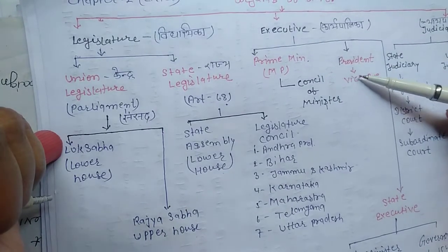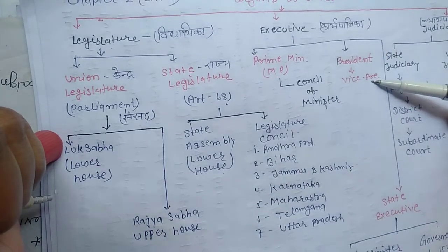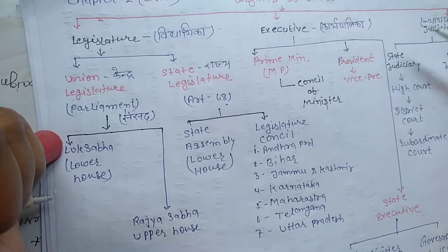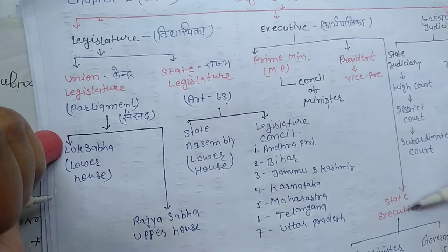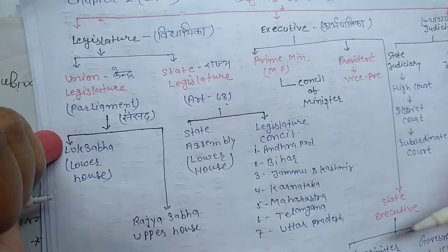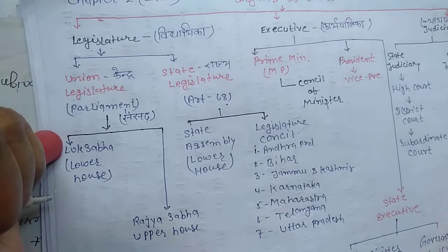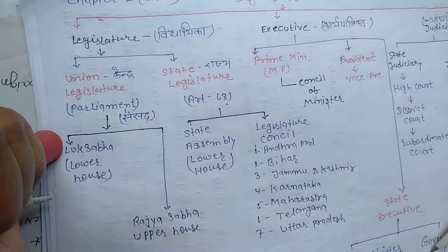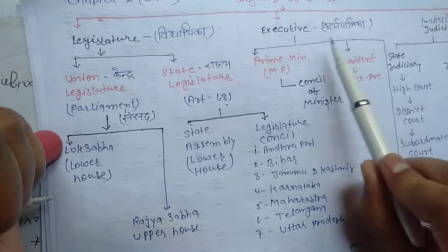Second part: President and Vice President. Third: State Executive — Chief Minister and Governor. These are the parts of the Executive.